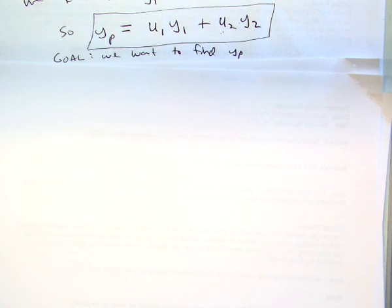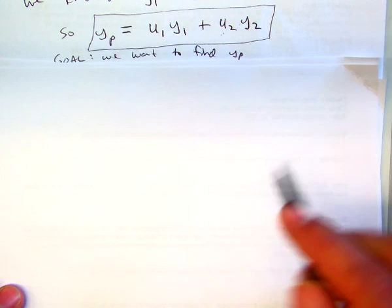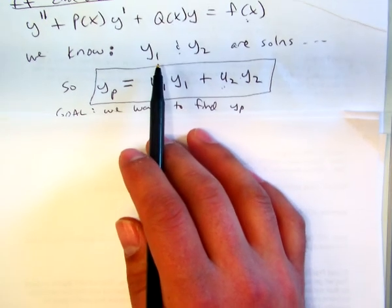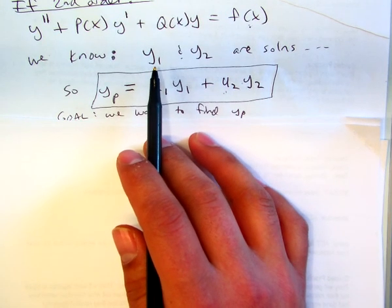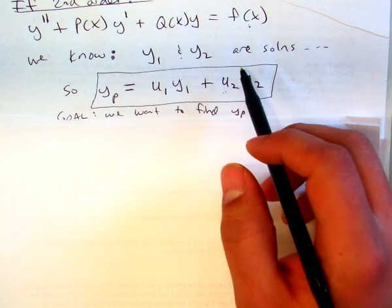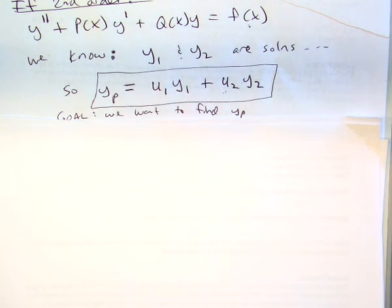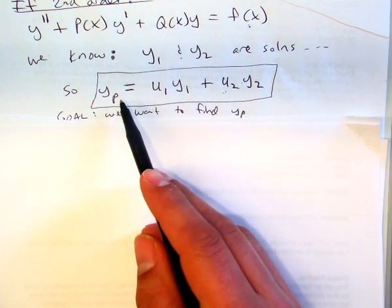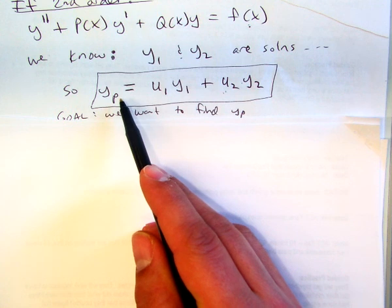Okay, so picking up where we left off yesterday, we were looking at a second-order differential equation, non-homogeneous, so we had it equal to f of x, and we got to a point where we were going to search for a particular solution that was in this form.